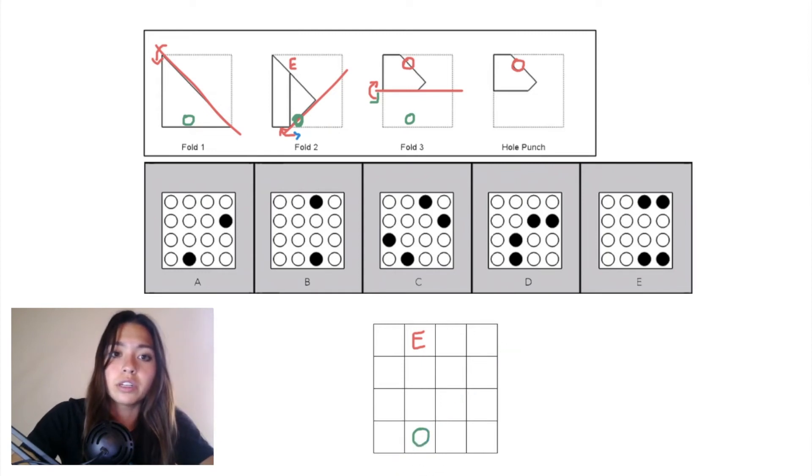In fold one, we need to reflect this triangular piece back across that diagonal plane. This hole punch, if we reflect it over, will end up right there. If we draw that same diagonal plane in our grid and reflect this green hole punch over, you can see how it would end up right there.